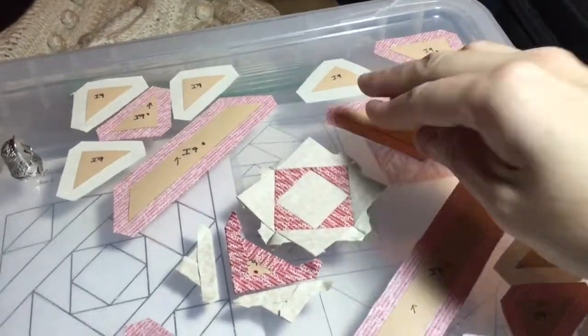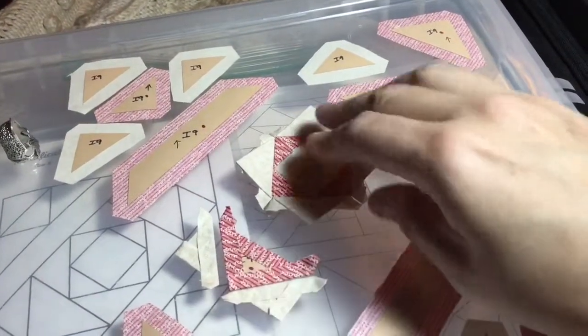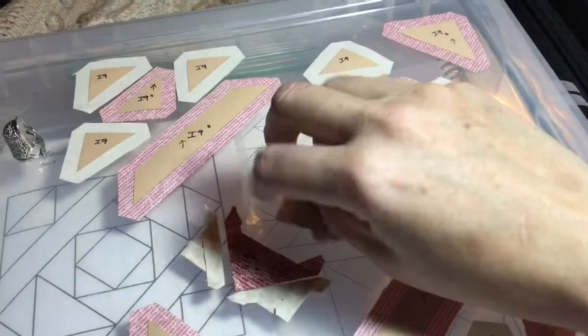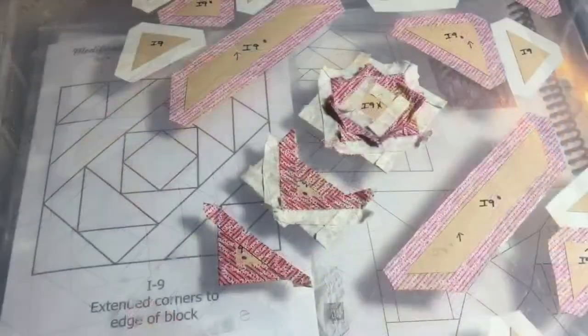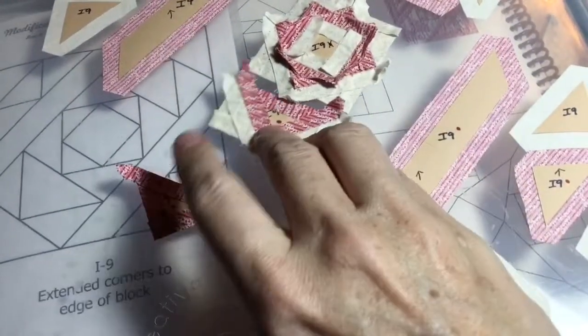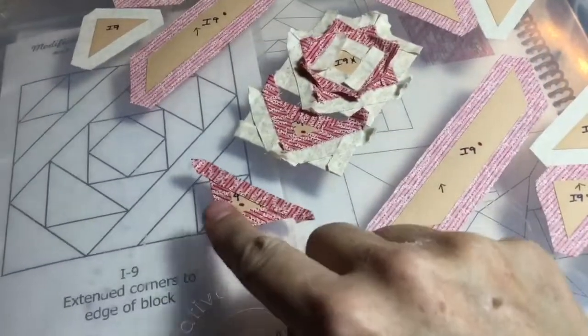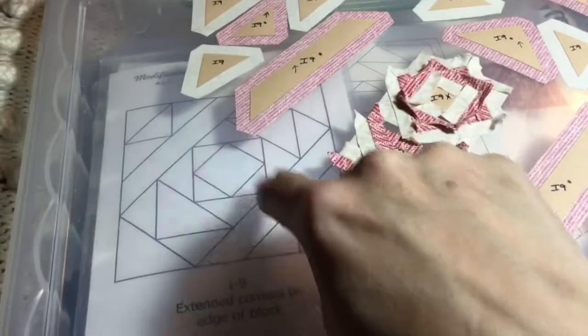I also have another unit on this side that I will do the same thing with. Let me get this assembled, and then I can attach it to my center section. So I've assembled my flying geese unit down here, and I'm going to attach it to my center piece. I've basted my outer triangle and I'm going to attach that so I can have this whole section together.